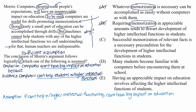C: Successful memorization of relevant facts is a necessary precondition for the development of higher intellectual functions in students. Our prediction has nothing to do with memorization, and three of the choices have opened with memorization. It may be true that memorization is necessary for development of higher intellectual functions in students, but we're still told in the passage that computers can't help students with higher intellectual functions. And if they can't help, they can't help. So choice C doesn't give us anything that ties the argument together.